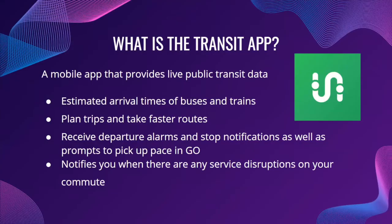Now we'll talk about an app called Transit. This is a mobile app that provides everyone with live public transit data. This app will give you the estimated arrival times of buses and trains, lets you plan trips, and will show you the faster routes. You can also receive departure alarms and stop notifications, as well as prompts to pick up your pace in a mode called Go, which we'll look at a little bit later. It will also notify you when there are any service disruptions on your commute.